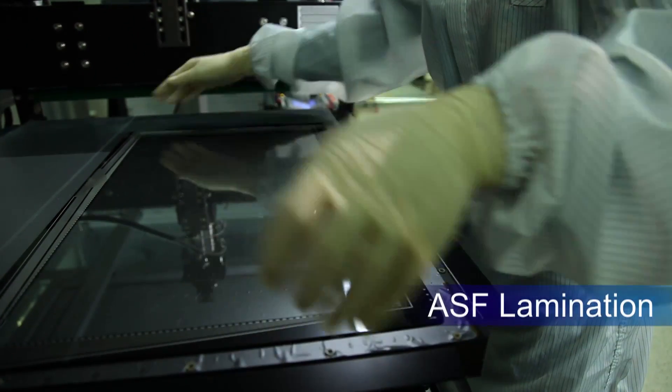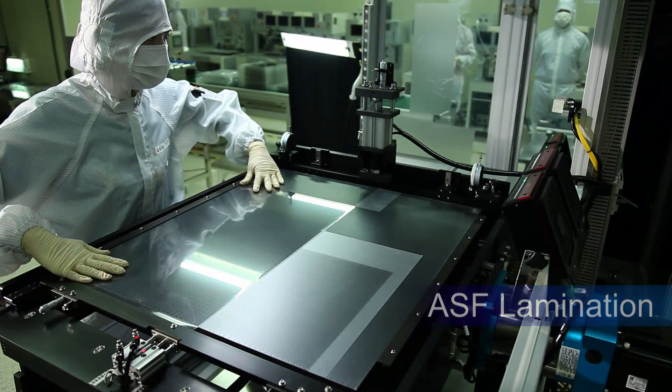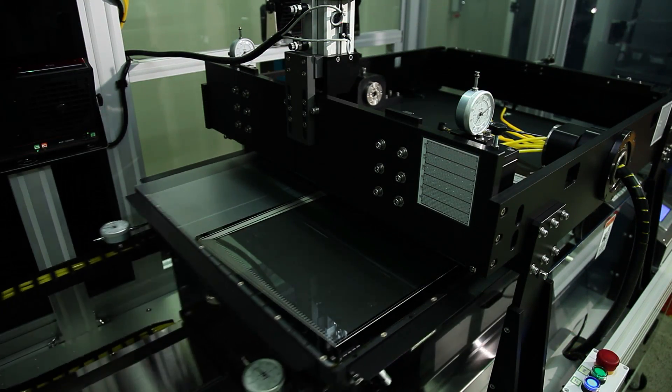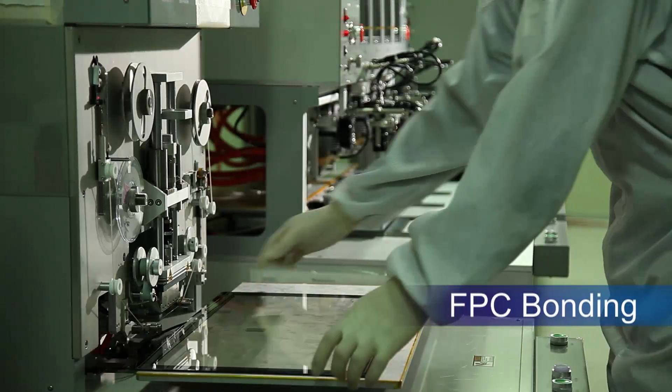Add on an anti-shatter film ensuring the extra strength of the panel. Curing the laminations by hot press.